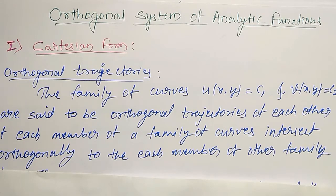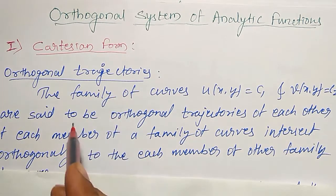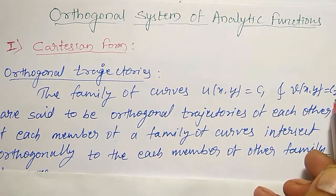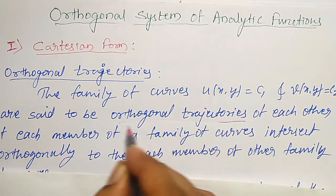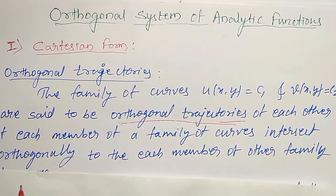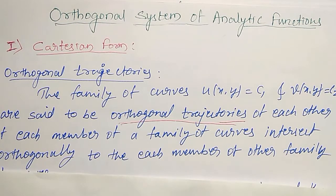Now before that, let me explain orthogonal trajectories in Cartesian form. The family of curves u(x,y) = c1 and v(x,y) = c2 are said to be orthogonal trajectories of each other if each member of one family of curves intersects orthogonally each member of the other family.